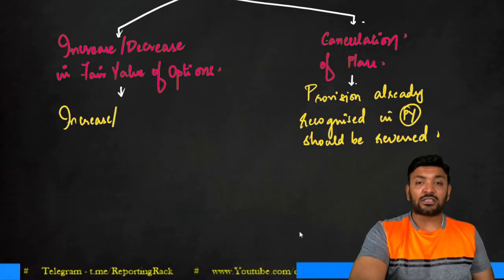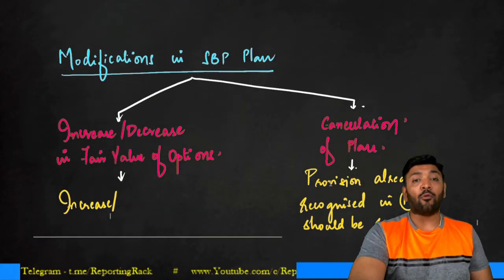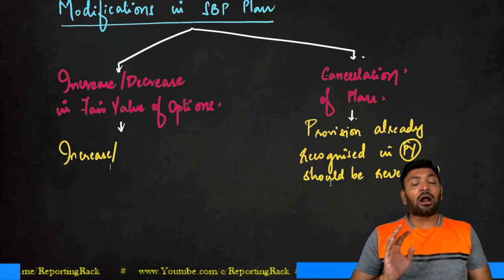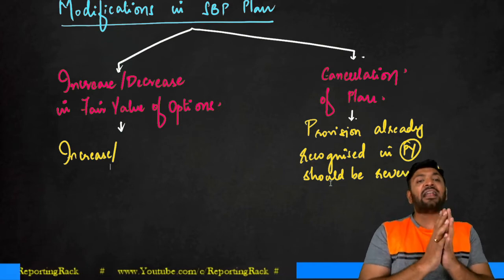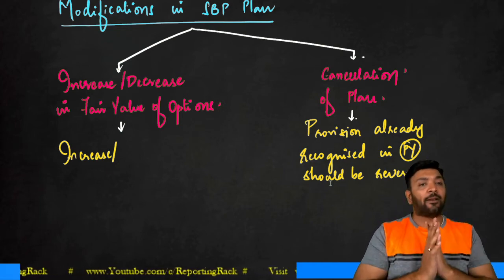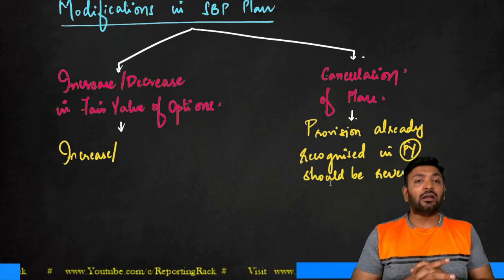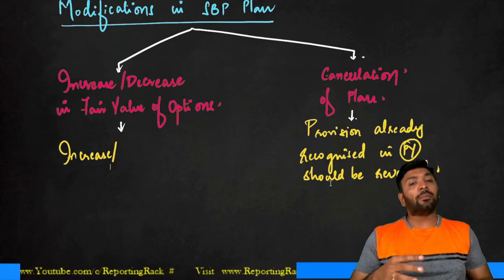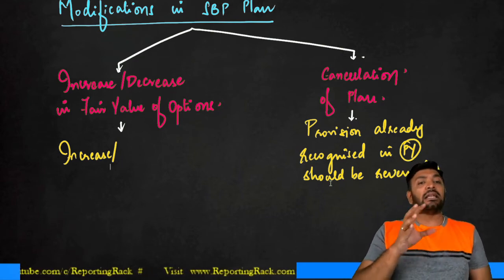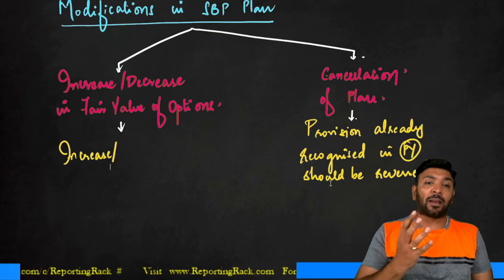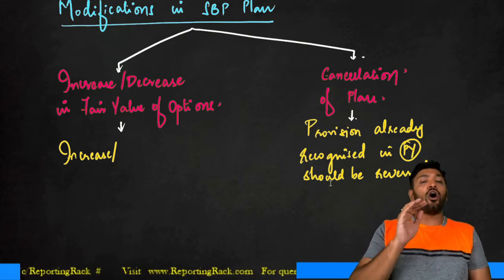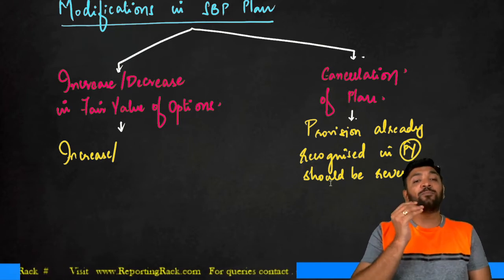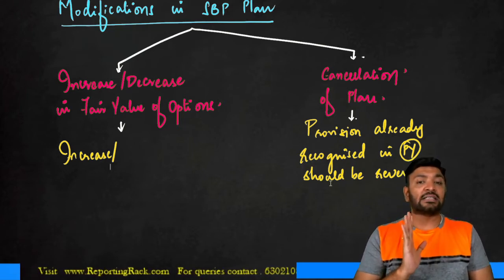We are coming up with the logic to say that sometimes there are modifications to the share-based payment plan. A modification means the plan which was initially announced has a change. What changes can occur? The change can occur where there is an increase or decrease in fair value — meaning the number of people entitled to the plan or the fair value of the options have increased or decreased, or the exercise price has changed.